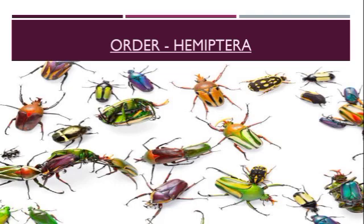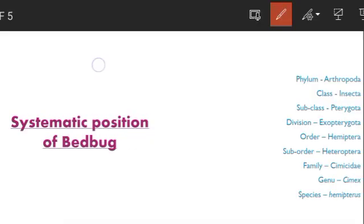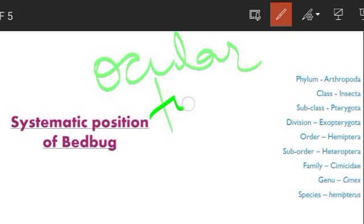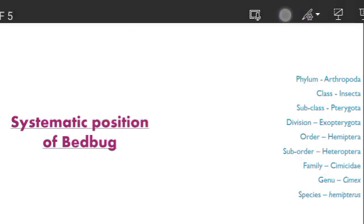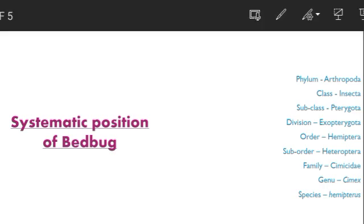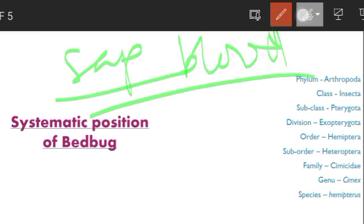In the family Cicadidae, ocelli could be 3 in number. In the case of aphids, a supplementary eye structure is also developed, called ocular tubercles. When talking about the mouthparts, they are piercing and sucking type, as Hemiptera insects are sap suckers and blood suckers.